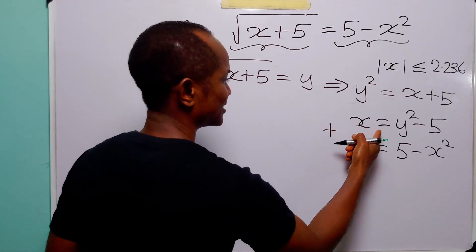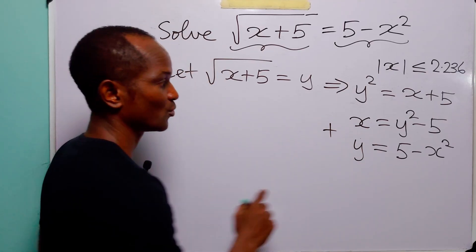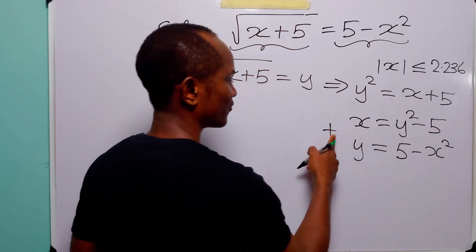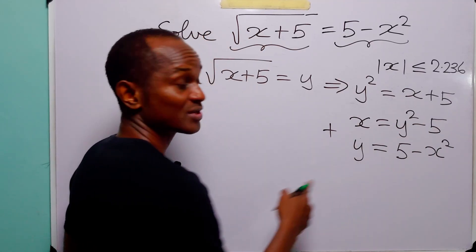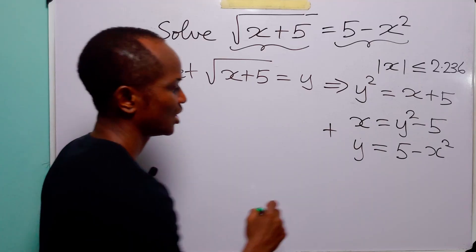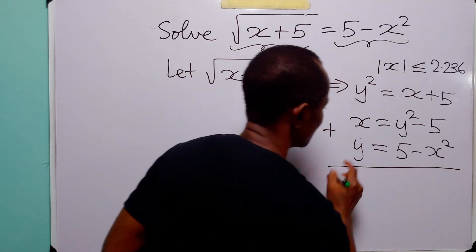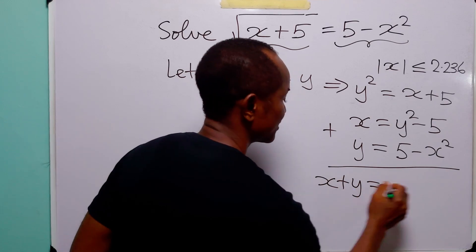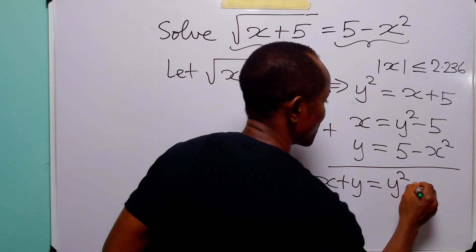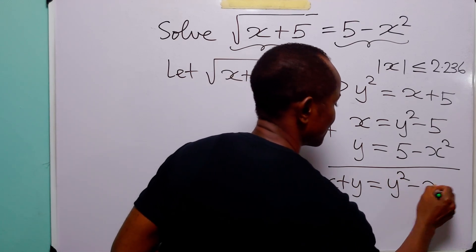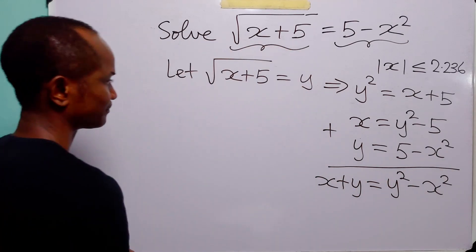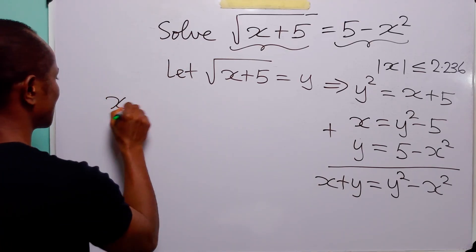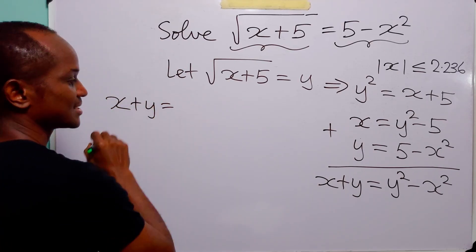Now look at these two equations: x = y² - 5 and y = 5 - x². If we add them together, we eliminate 5 because -5 + 5 = 0. Adding gives: x + y = y² - x².